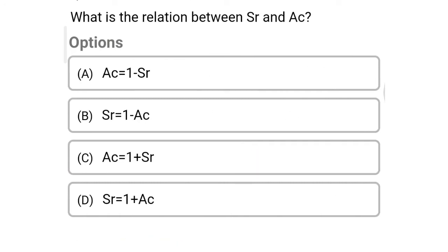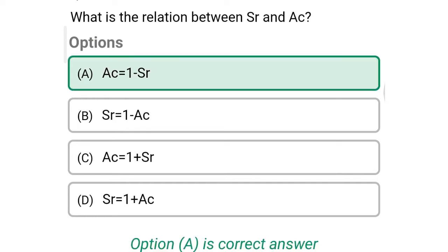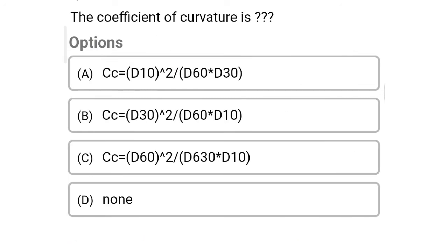So next question: which is the relation between SR and AC, that is shrinkage ratio and air content? Option A: AC equal to 1 minus SR. Option B: SR equal to 1 minus AC. Option C: AC equal to 1 plus SR. Option D: SR equal to 1 plus AC. So the correct answer is Option A, AC equal to 1 minus SR.